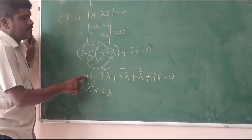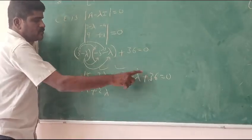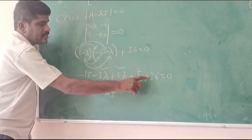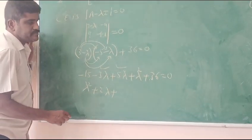Minus 15 plus 36, that's 36, which is 21. 21.